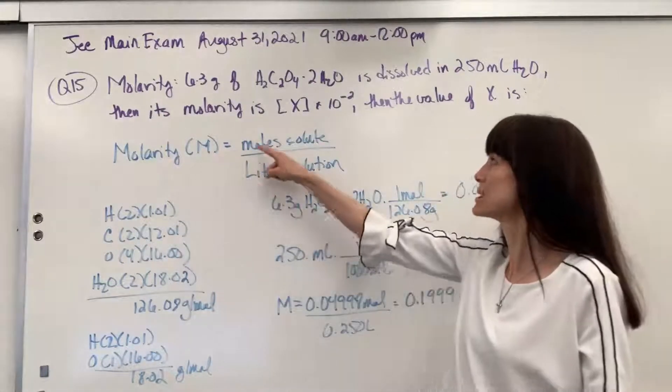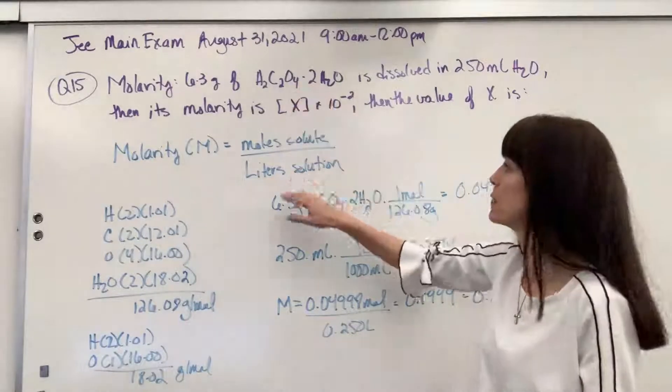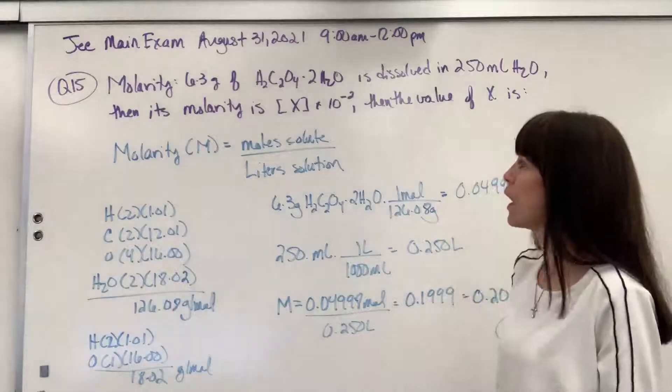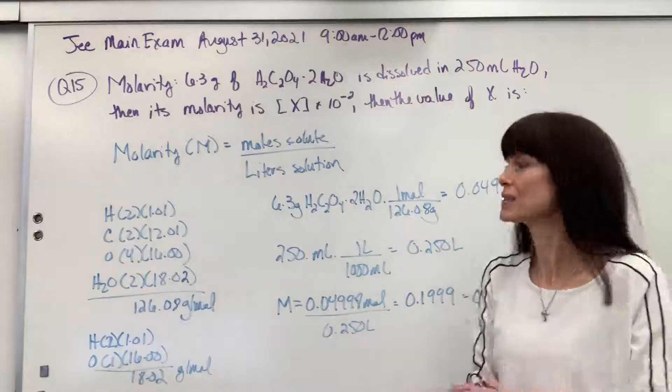Molarity capital M is moles of the solute, which is going to be our oxalic acid dihydrate, and liters of the solution, which is the 250 mL. All we have to do is get the right units for the solute and the solution. Let's divide it.